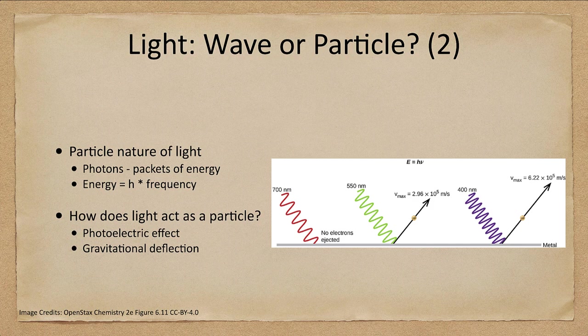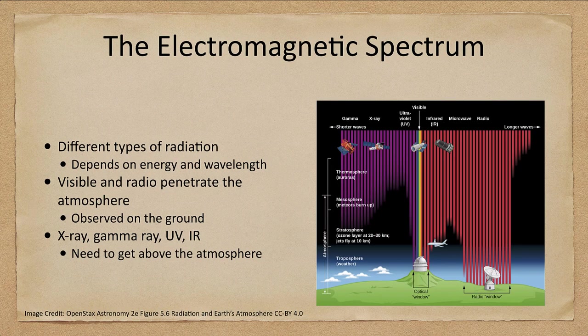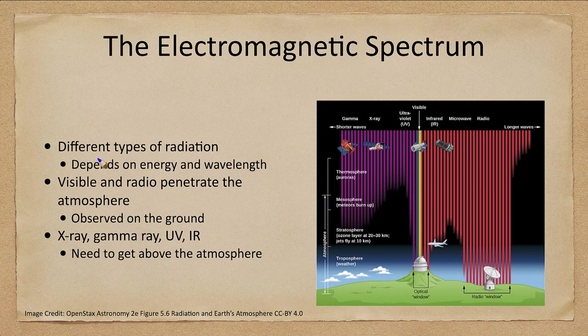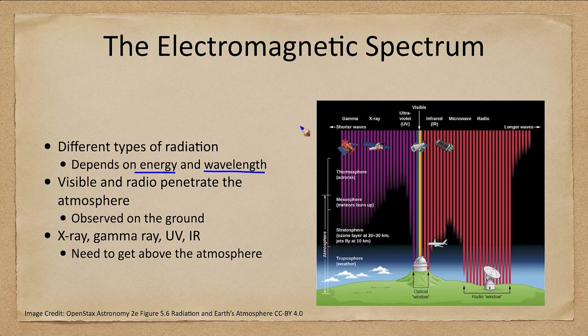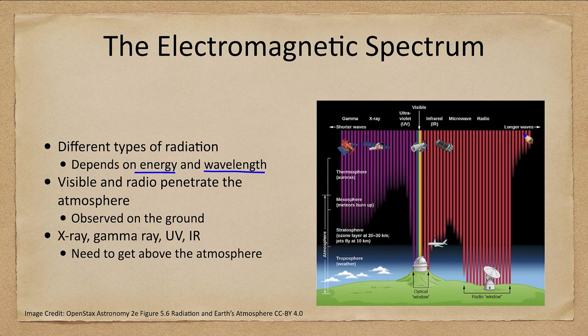So let's look at the electromagnetic spectrum, how we can split up this light. We looked at this a little bit already and we'll come back to this when we talk about telescopes. But there's different types of light depending on their energy and their wavelength.